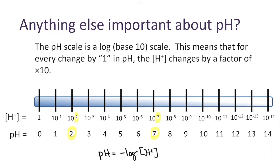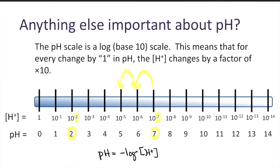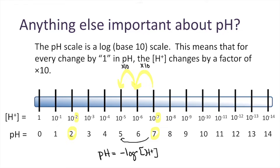The other important thing to note is that as your pH changes by a factor of 1 — say we go from a pH of 7 to a pH of 6 — our hydrogen ion concentration increases by a factor of 10. Going from pH 6 to pH 5 increases it by another factor of 10, so going from pH 7 to pH 5 increases hydrogen ion concentration by a factor of 100, and going from pH 7 to pH 4 increases it by a factor of 1,000.